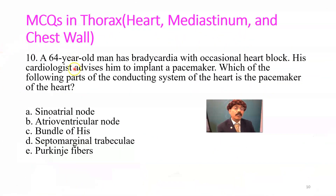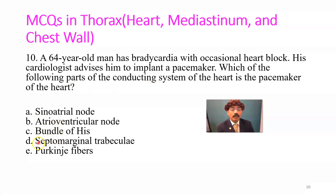Question number ten: a 64-year-old man has bradycardia — decreased heart rate — and occasional heart block. His cardiologist advises him to implant a pacemaker. Which part of the conducting system of the heart is the natural pacemaker? Choices are: A) SA node, B) AV node, C) bundle of His, D) septomarginal trabecula, E) Purkinje fibers. Answer is the SA node — this is the pacemaker of the heart.